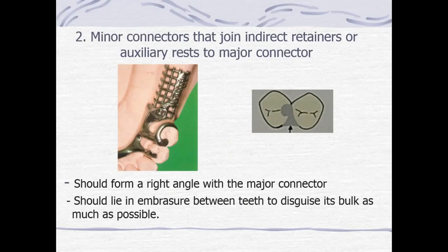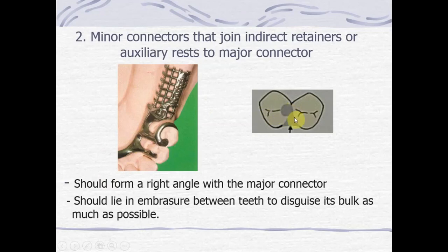The second type of minor connector joins the indirect retainers or auxiliary rest to the major connector. There are two important features: first, it should form a right angle with the major connector; and second, it should lie in the embrasure between the teeth, using as little bulk as possible.